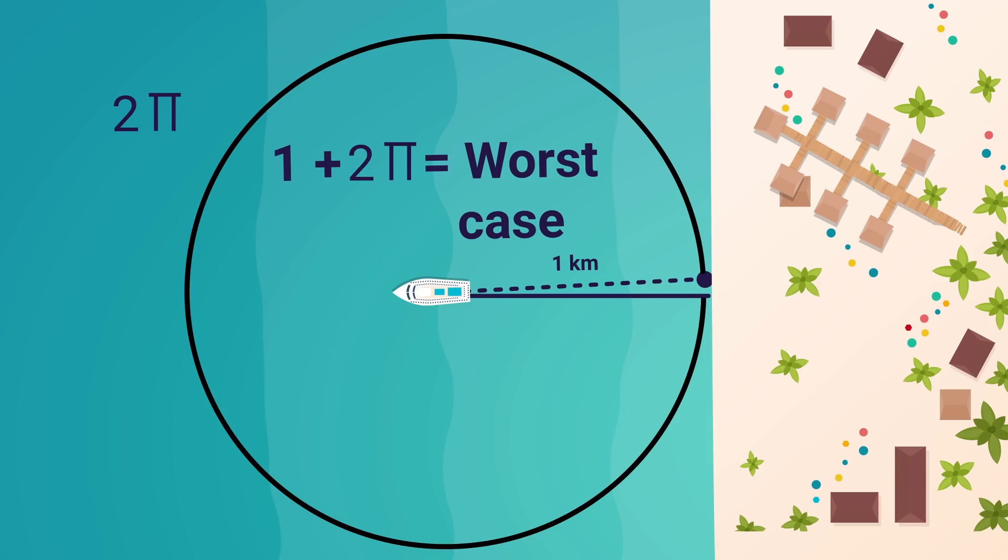Now, this is the method most people commented on Twitter when I posted this question. But this is not the best we can do. We can do something else where the worst case scenario is less than one plus two pi.